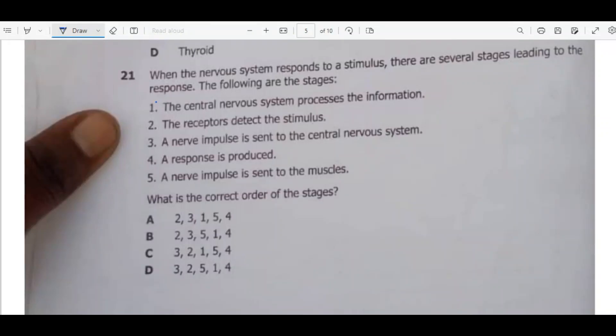Welcome. In this tutorial we are going to look at marriage paper 1 for the year 2023, and this is just the completion of this paper since we've done questions 1 to 20. We are beginning from 21 up to 40.